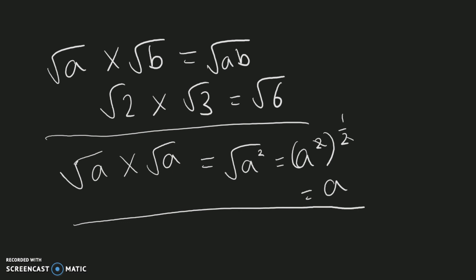This is represented by the square root of three multiplied by the square root of three equalling just three. The square root squared cancels out the power of one-half and simply gives the value inside.